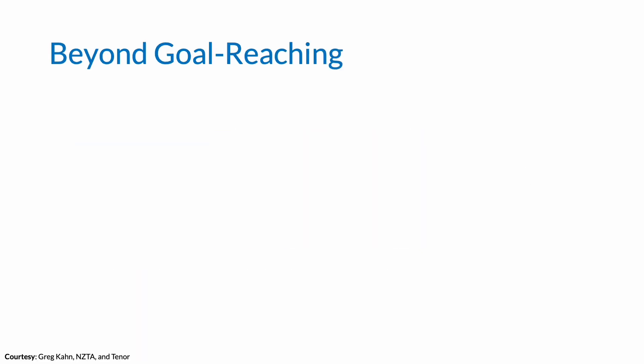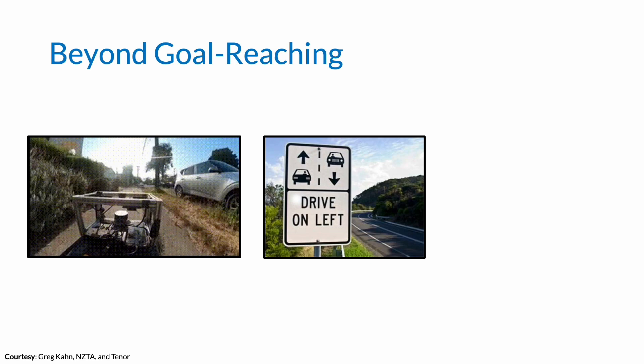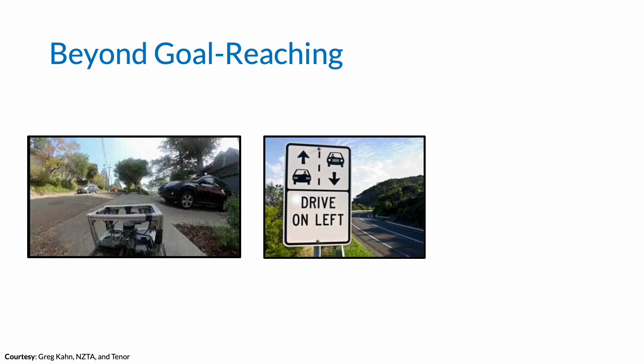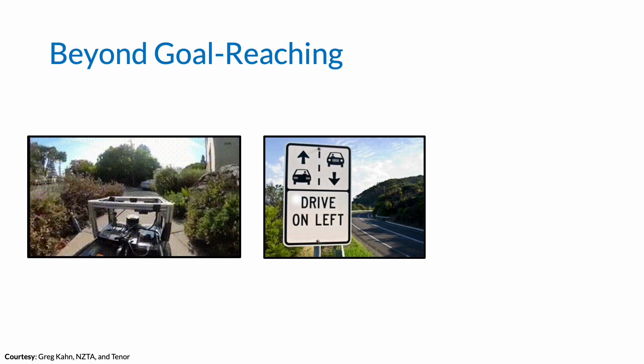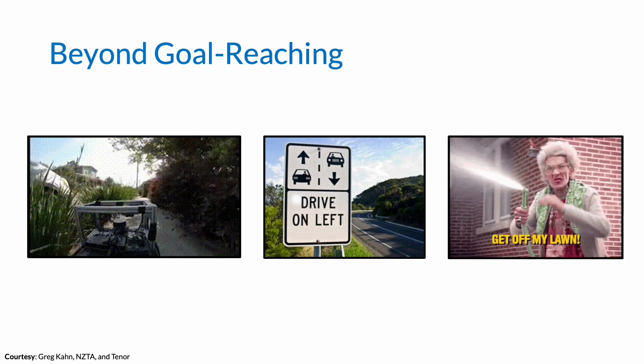Solving the task of visual navigation, however, requires more than simply reaching the goal. For instance, a general purpose navigation system may need to obey safety constraints like driving on the sidewalk or on the left side of the road and register preferences such as avoiding a freshly mowed lawn.